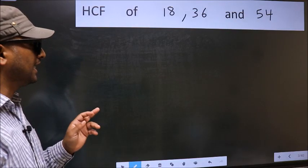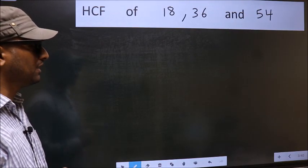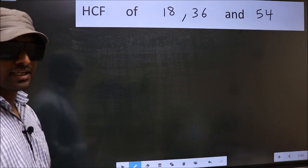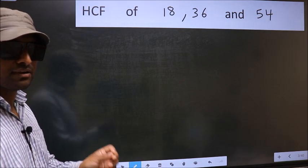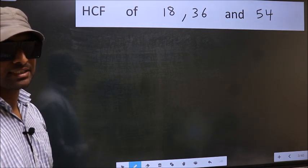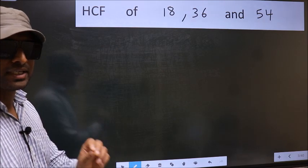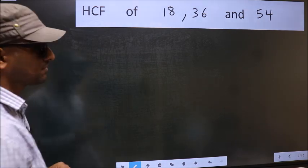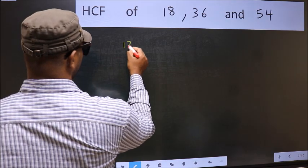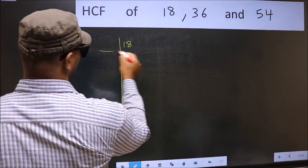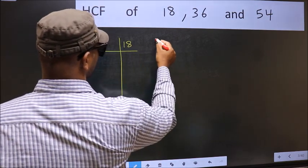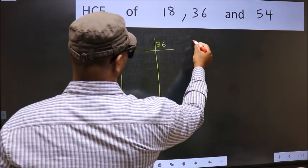HCF of 18, 36, and 54. To find the HCF, we should do the prime factorization of each number separately. What I mean is 18, 36, and 54.